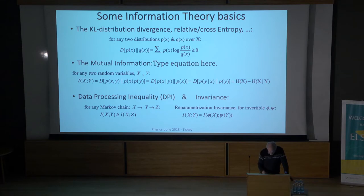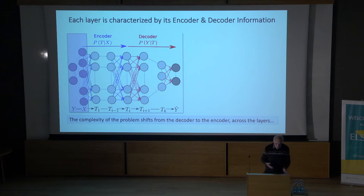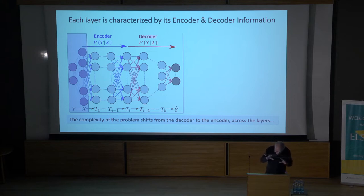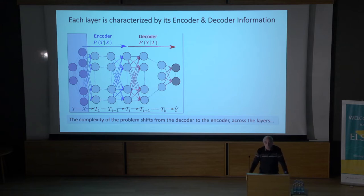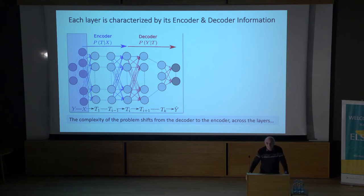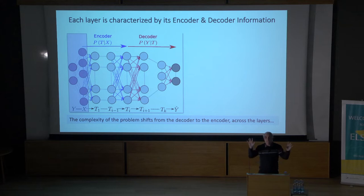The gist of what some of us call the information bottleneck theory of deep learning—I just call it another perspective, certainly not a complete perspective, on how to think about deep neural networks. It's really, in some sense, complementary or even a mirror image of the talks we just heard, especially from Shai and Andrew. I want to think about the large-scale picture, where information measures like entropy and mutual information become very important because of the typicality—the asymptotic equipartition—property.